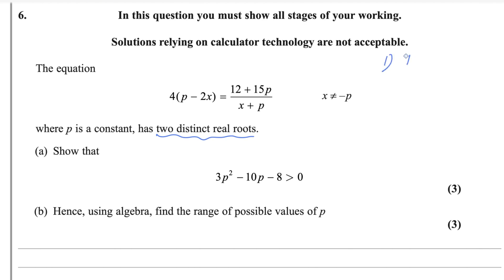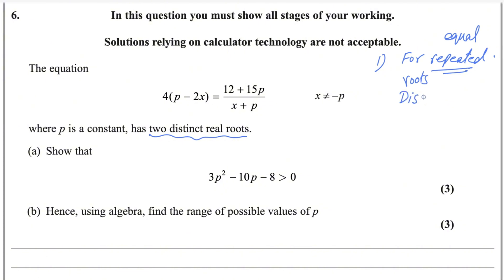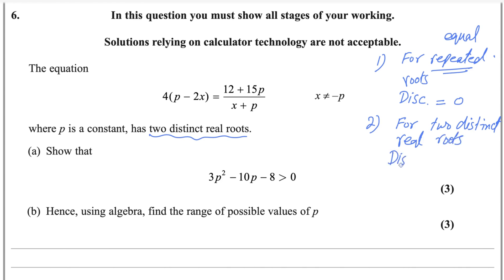First rule: for repeated or equal roots, the discriminant b squared minus 4ac equals 0. Second rule: for two distinct real roots, the discriminant is greater than 0. Third rule: for no real roots, the discriminant is less than 0. These three rules you have to memorize.